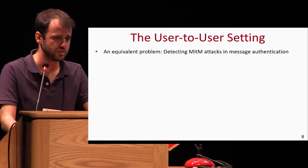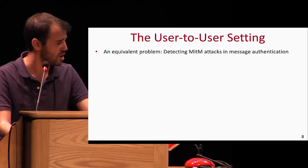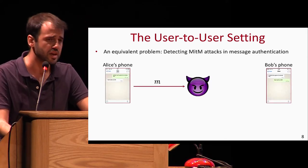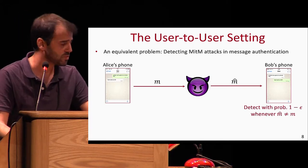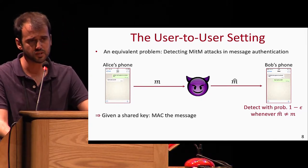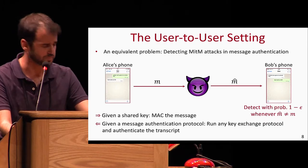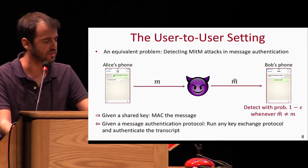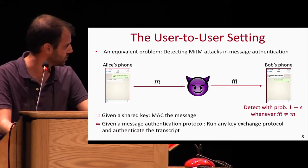Let's talk about the user-to-user setting. To formalize it, it is helpful to think of an equivalent problem: detecting man-in-the-middle attacks in message authentication. Alice wishes to send some message M to Bob, who receives a possibly tampered message M-hat, and Bob wishes to detect with probability at least one minus epsilon whenever M-hat is not M. If users share a secret key, Alice can simply MAC the message. Conversely, if there exists a message authentication protocol resilient to MITM attacks, they can run any key exchange and authenticate its transcript.